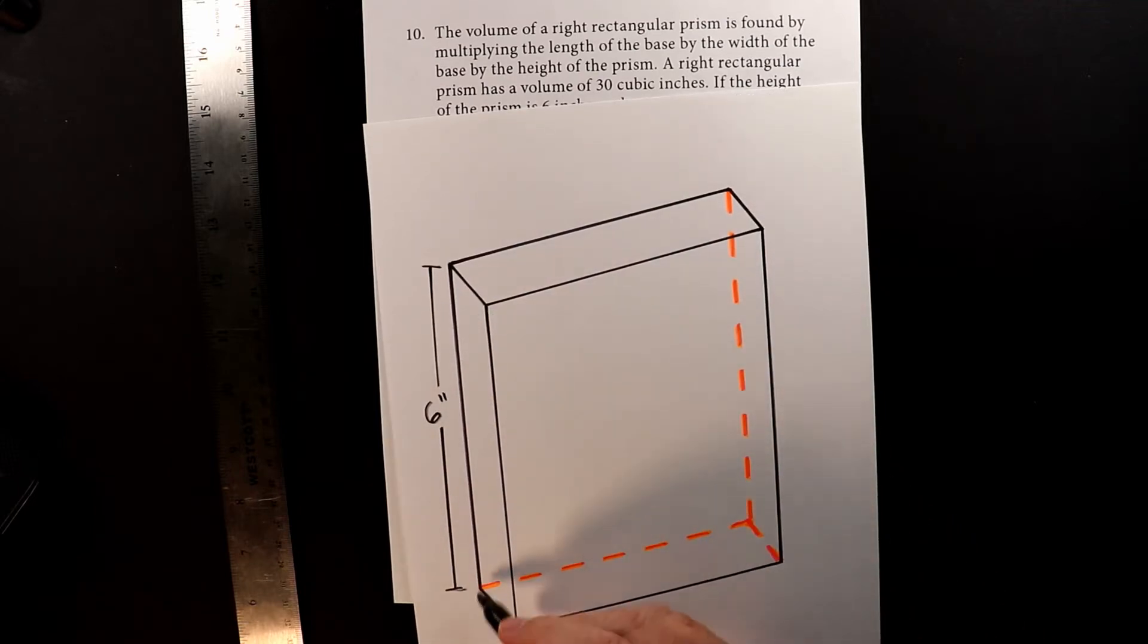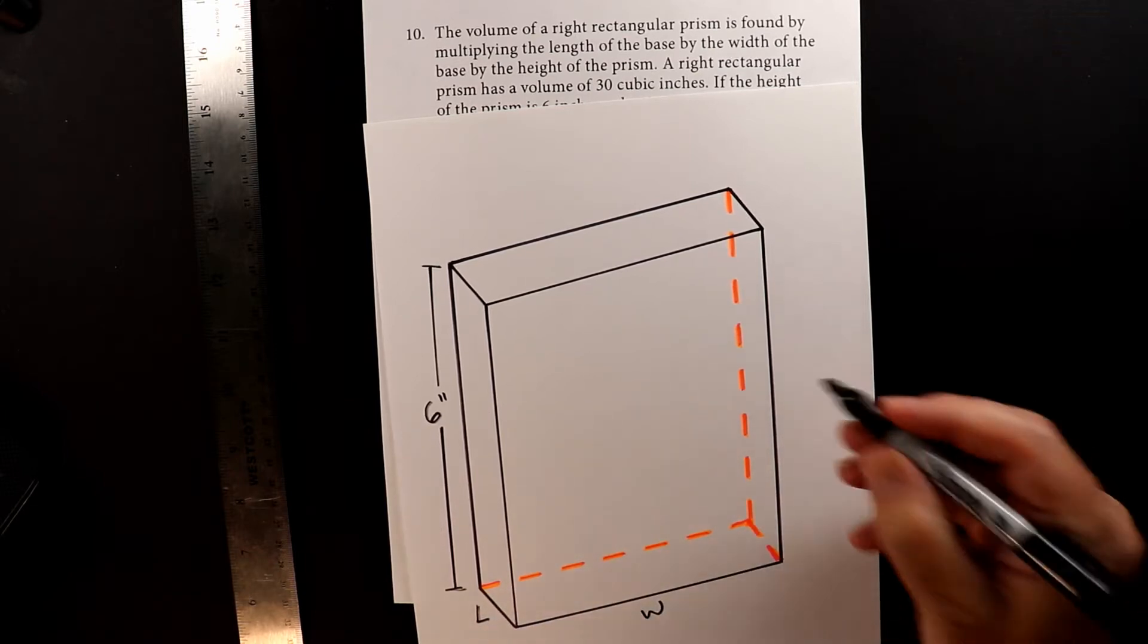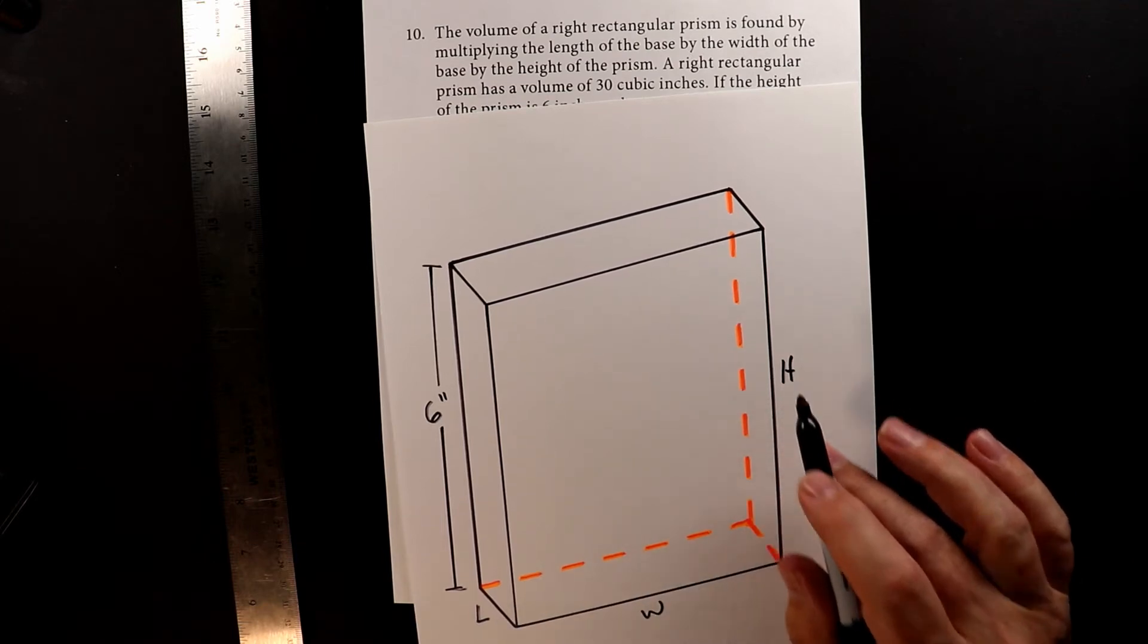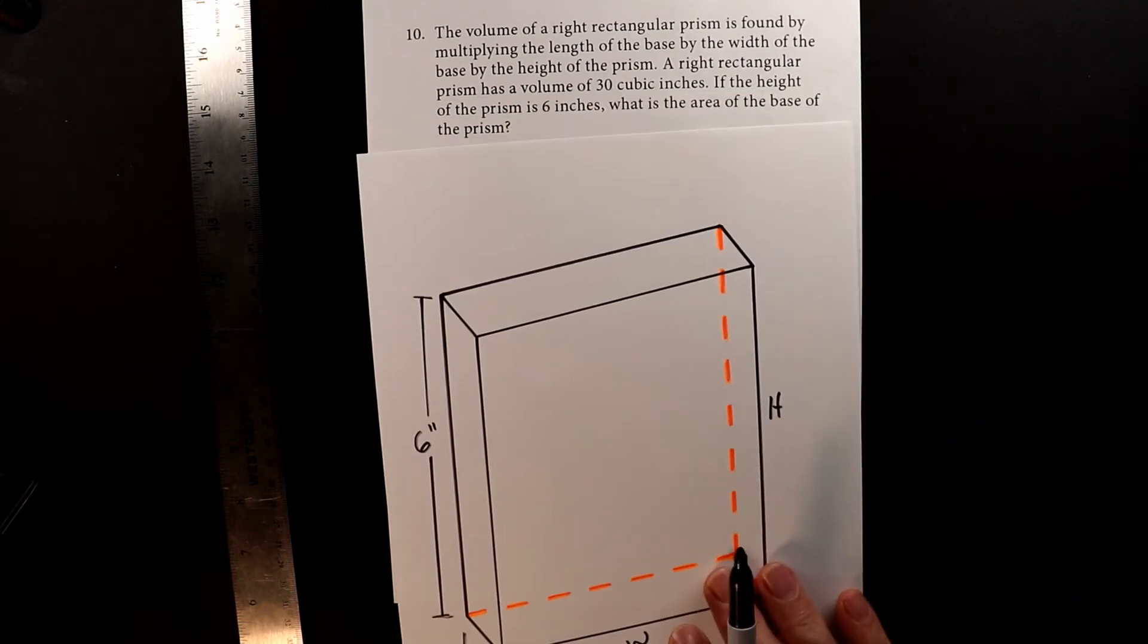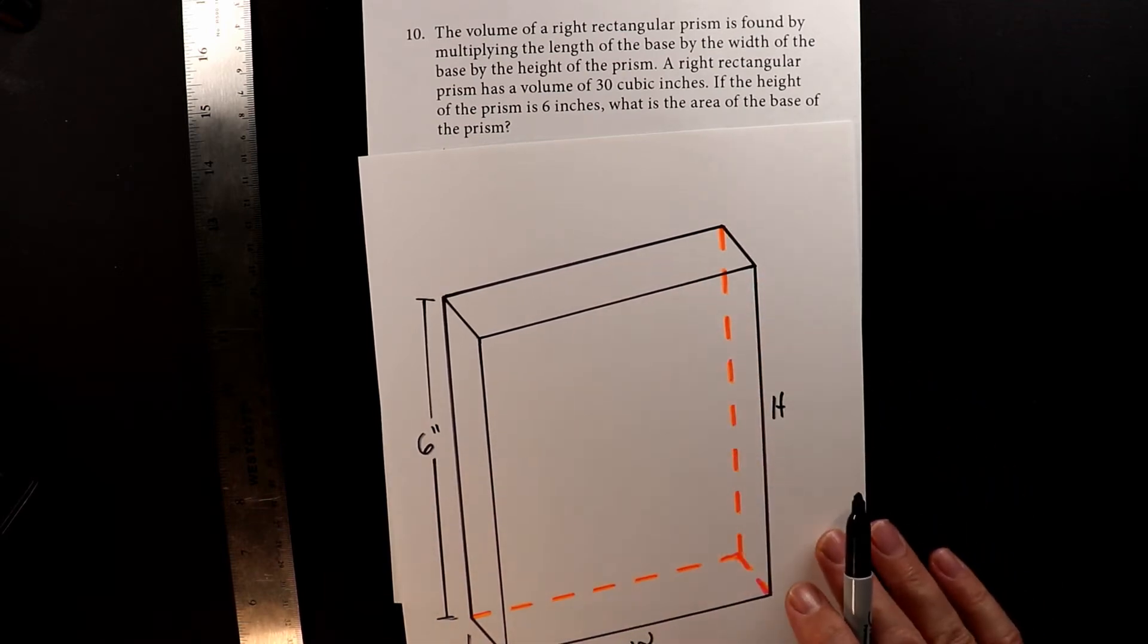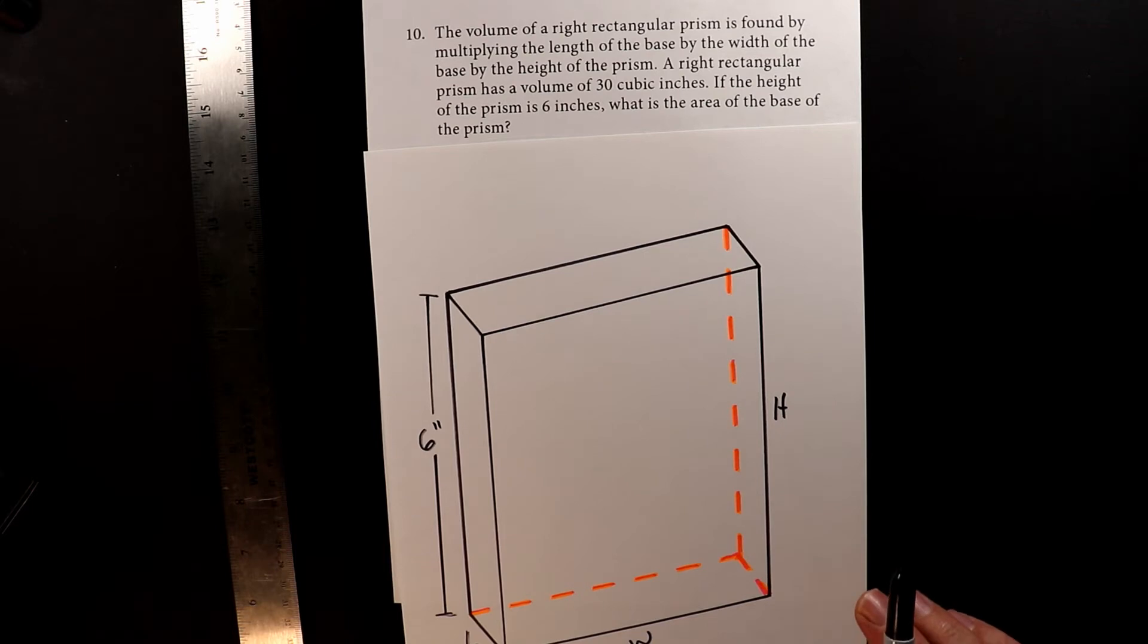So we have L, W, and H. So if you knew these three, you could get 30. But we only know this one for sure, and the total volume is 30. So let's do some math.